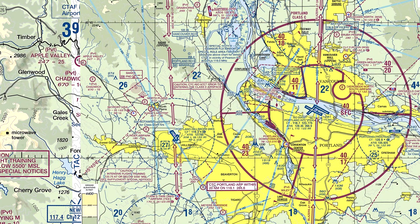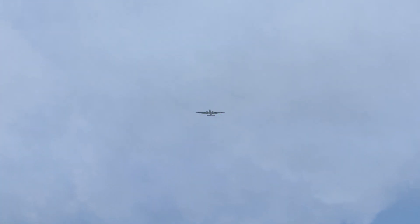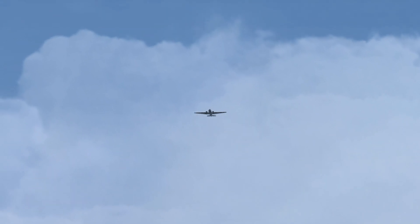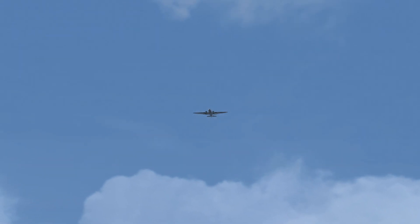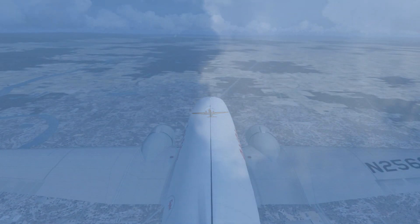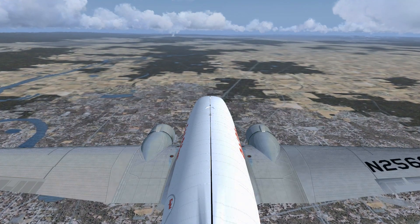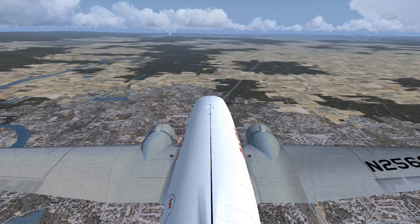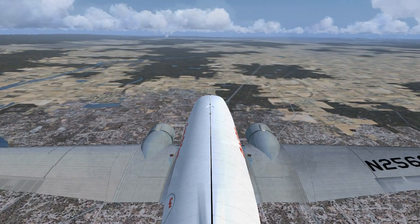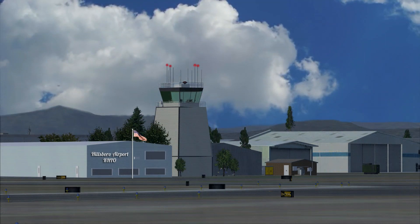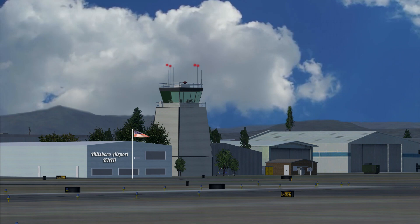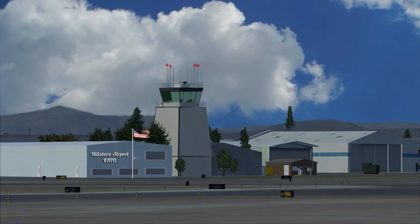Roger, 15,000, altimeter 2-0-2-4. Hillsborough Approach, roger, descend and maintain 4,500 inbound. Contact Hillsborough Tower on 119.3 at 8 miles. Capital Air November 256-892, Hillsborough Approach, roger. Capital Air November 256-892, Hillsborough Tower, 256-89, 8 miles southwest, ready for land with Bravo. Hillsborough Tower, Capital Air November 256-892, inner left downwind approach, altimeter 2-9-9-2.